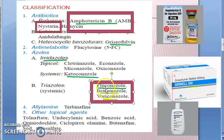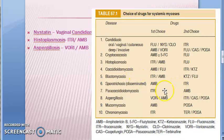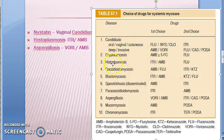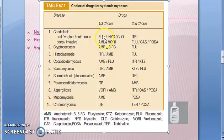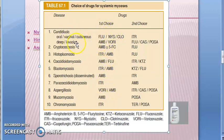In systemic mycosis, the triazoles are first-line drugs. Fluconazole, itraconazole, and voriconazole are all first-line drugs, as is amphotericin B. Nystatin is the first-line drug for vaginal candidiasis. These azoles are very, very important.